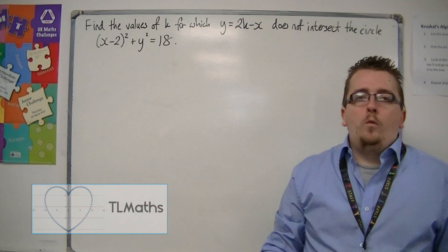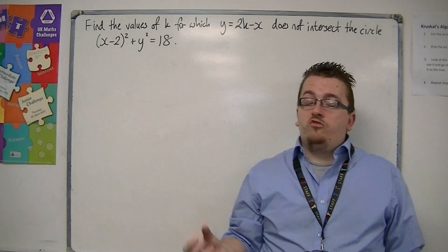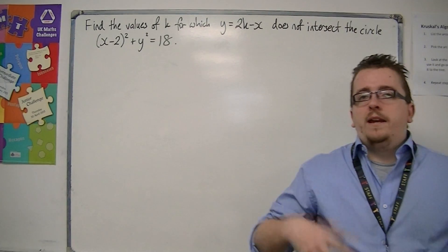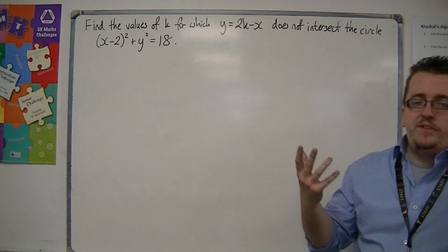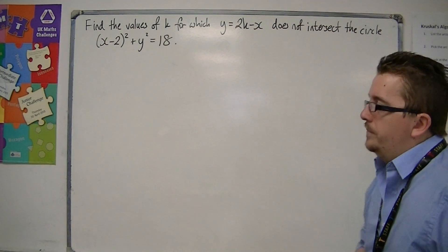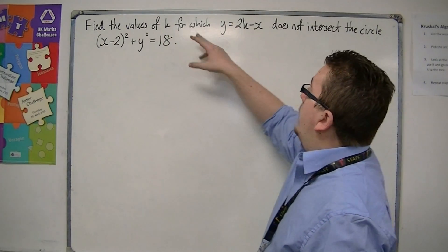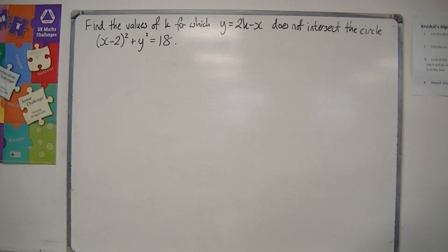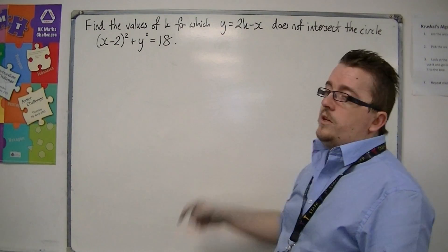In this video, we're going to look at how quadratic inequalities can be incorporated into a circle's question. What we're looking at is the intersection between a straight line and a circle. What we want to do is find the values of k for which this straight line does not intersect the circle, x minus 2 all squared plus y squared equals 18.